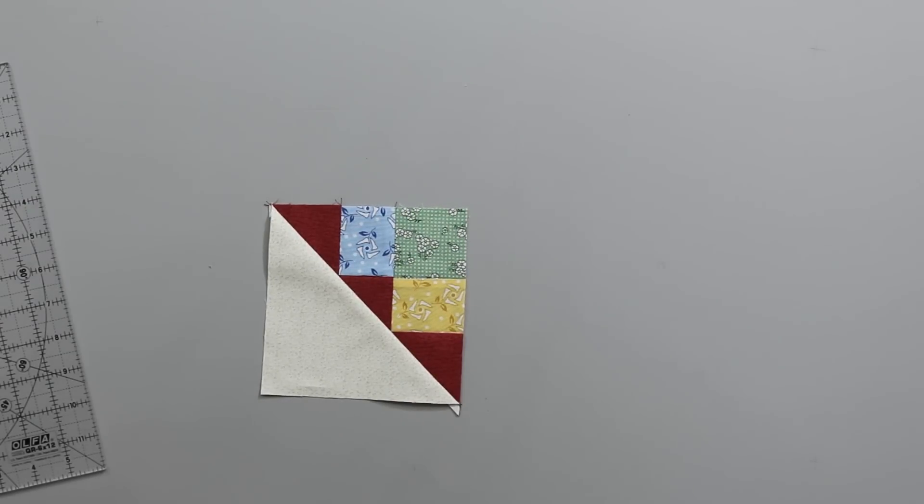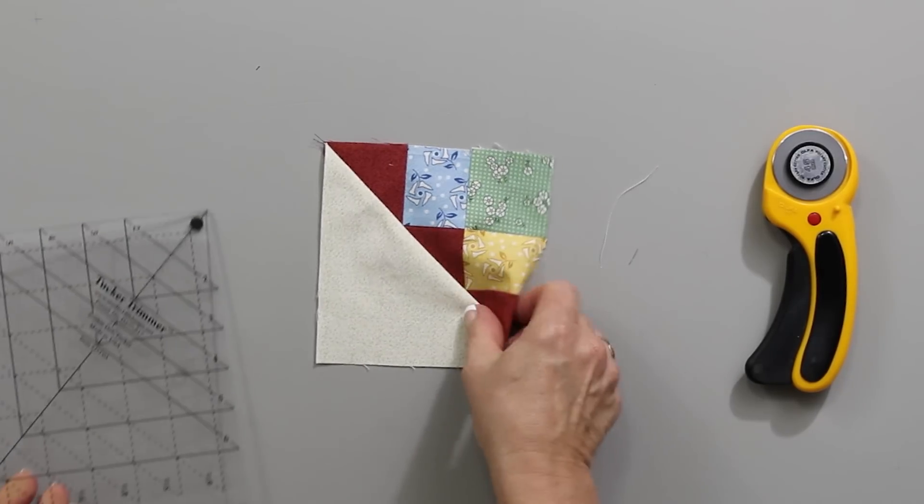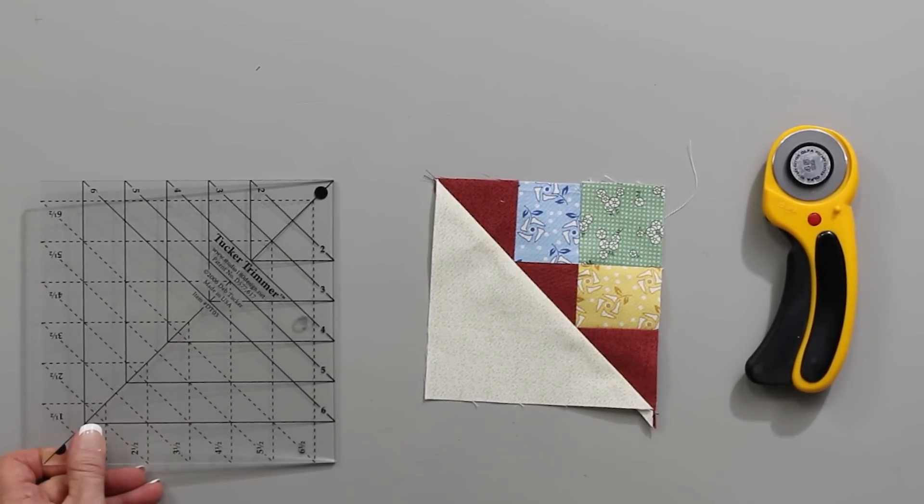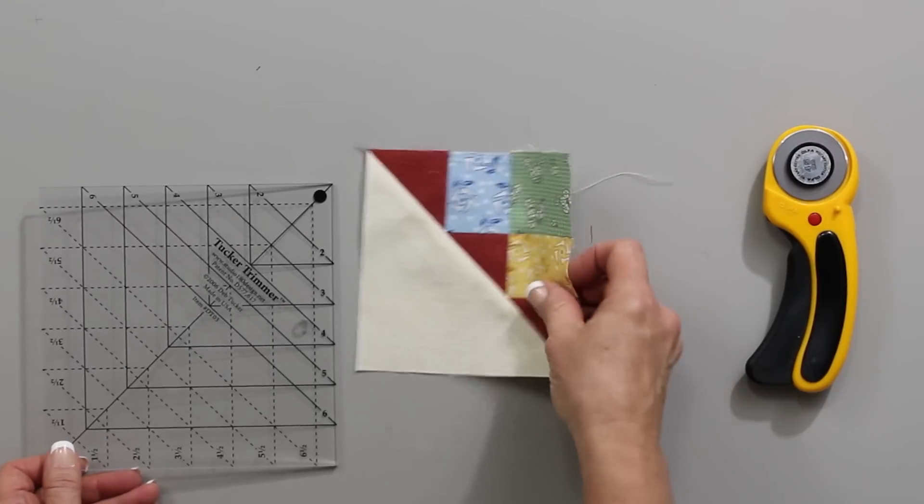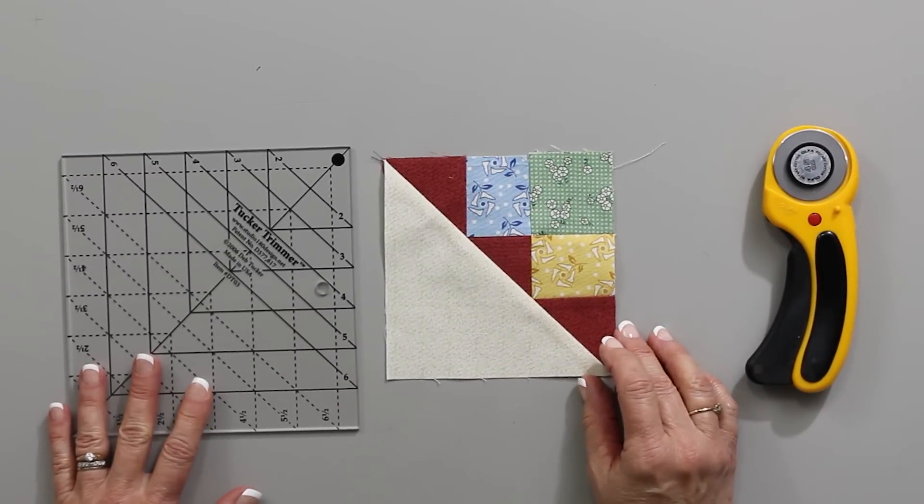When you're done, you'll end up with a unit that is a shaded nine patch that is a little too big, and that's where that Tucker Trimmer tool comes into play. That Tucker Trimmer tool is what I'm going to use to trim this down. Now if you remember, back at the beginning, I mentioned that the size I'm making is a four and a half inch finished unit. That means when all the sewing is done, this will measure four and a half inches. That means I need to trim this to five inches.